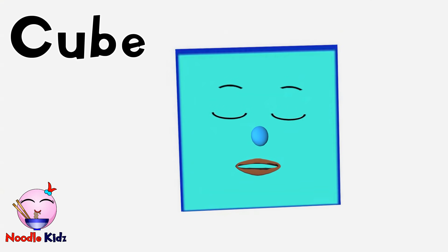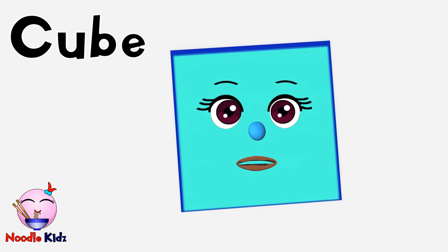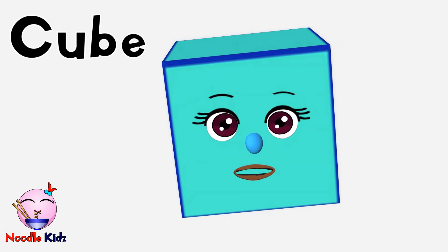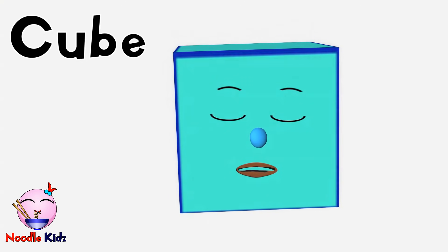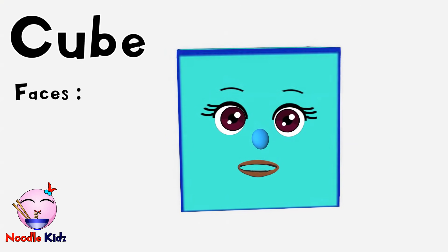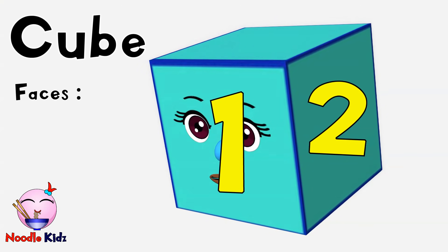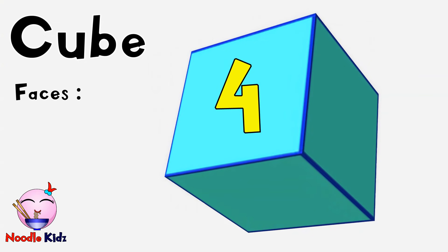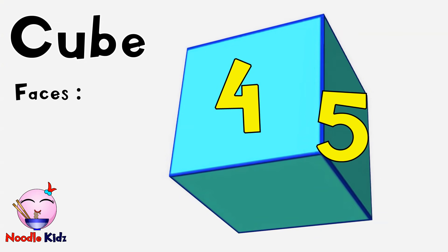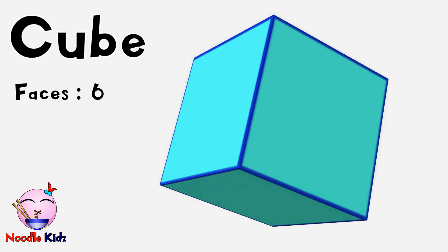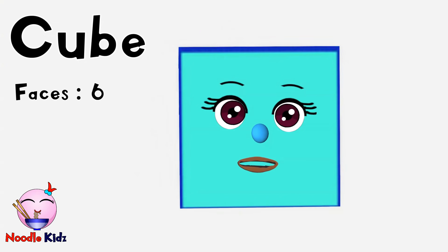I don't have a curved face, therefore I cannot roll. But I have many flat faces. Let's count them: one, two, three, four, five, six. That's right! A cube has six flat faces.